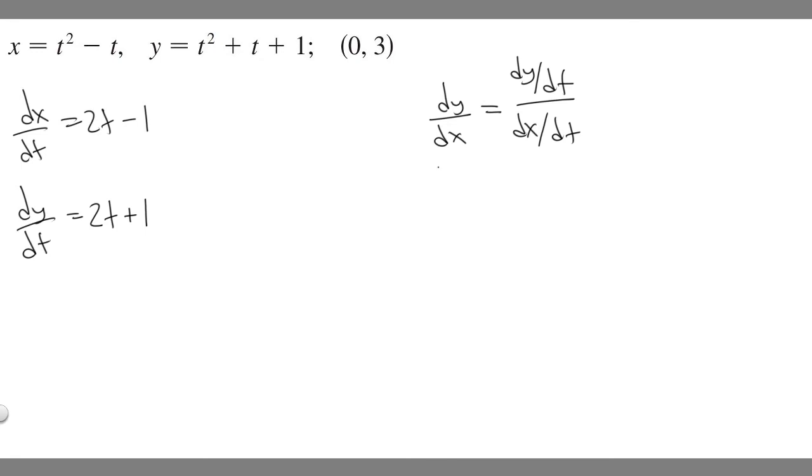So that's dy/dt, we have dx/dt. Now we can plug them in. So dy/dx equals (2t + 1) over (2t - 1).